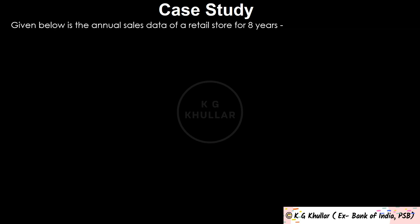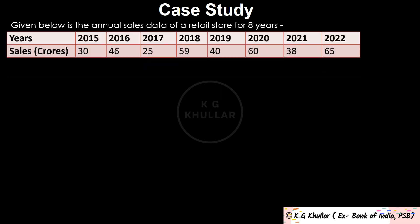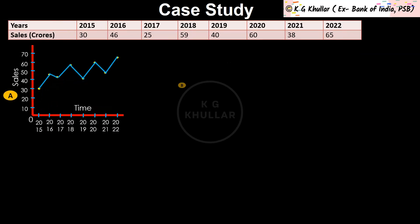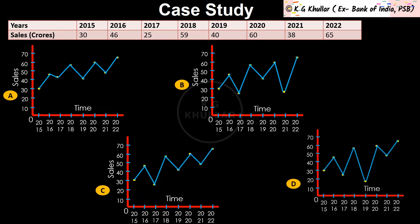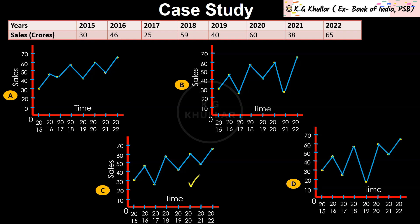Let's do a case study to make things crystal clear and see how questions can appear in your examination. Given below is the annual sales data of a retail store for the last 8 years. The first question is: which of the following correctly represents the time series? This question requires no calculation — just look at the points and check which graph shows them correctly. When you see option C, all the data points are correctly represented, so the correct answer is option C.